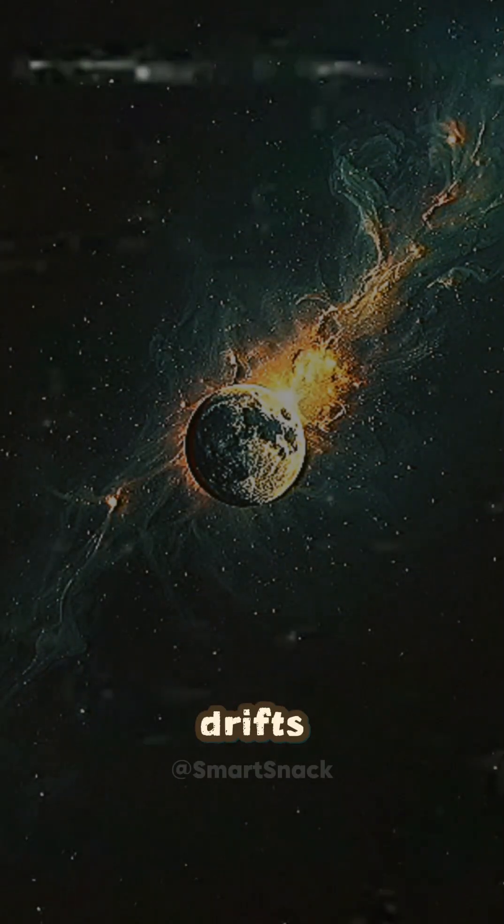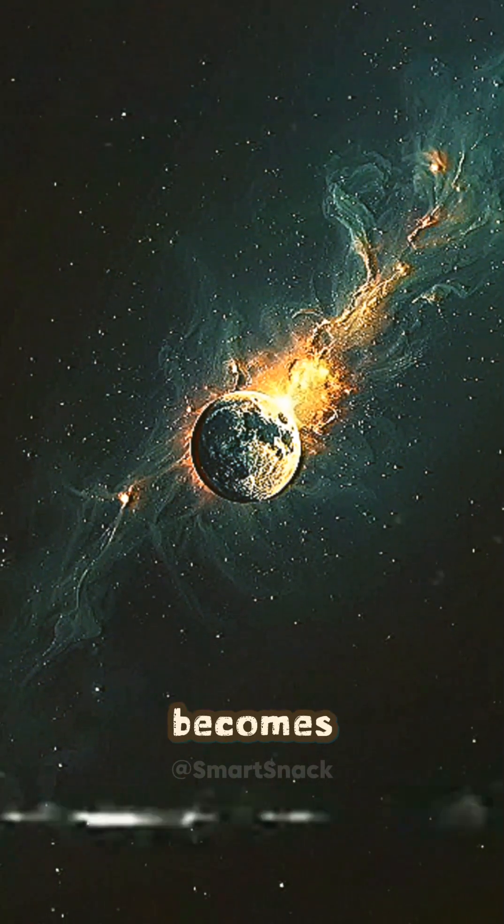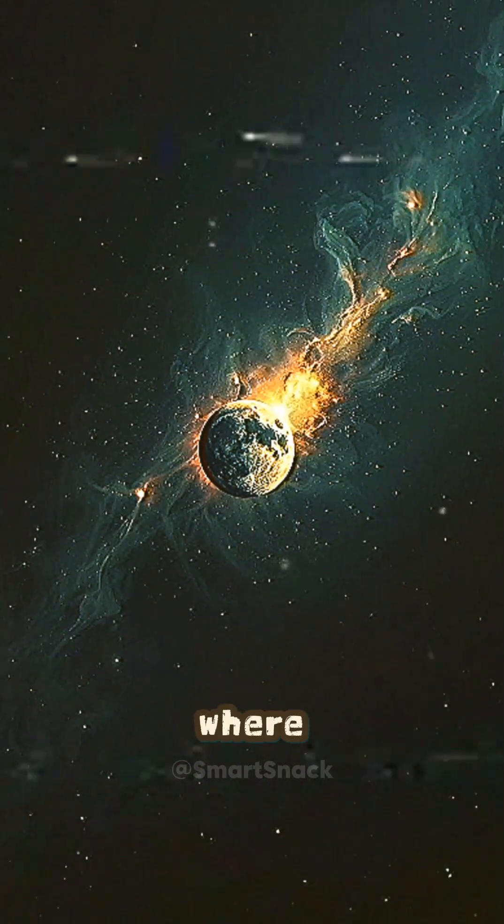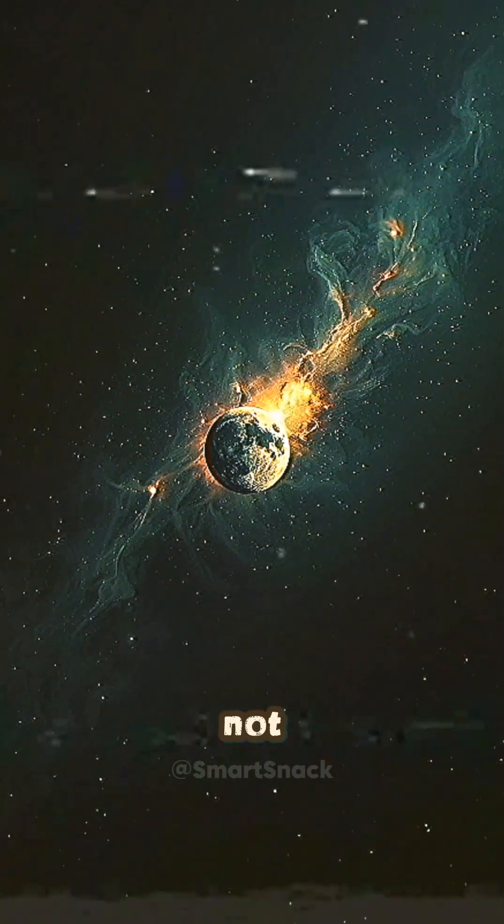And if the moon drifts too far, it breaks free, and Earth becomes a violently tilting, season-shifting world. A planet where life survives only by adapting fast, or not at all.